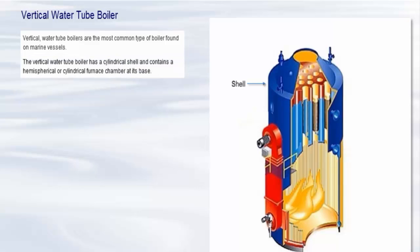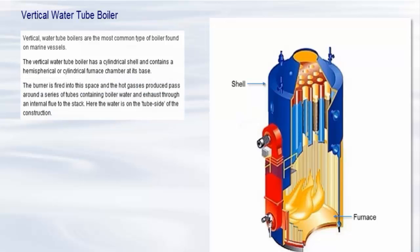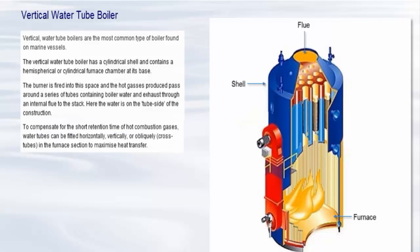The vertical water tube boiler has a cylindrical shell and contains a hemispherical or cylindrical furnace chamber at its base. The burner is fired into this space and the hot gases produced pass around a series of tubes containing boiler water and exhaust through an internal flue to the stack. Here the water is on the tube side of the construction. To compensate for the short retention time of hot combustion gases, water tubes can be fitted horizontally, vertically or obliquely cross tubes in the furnace section to maximize heat transfer.